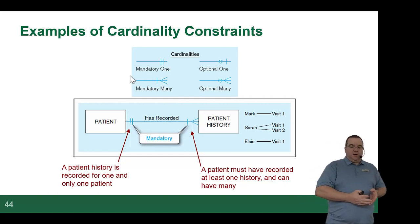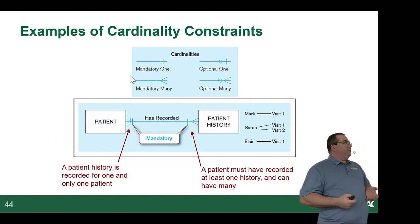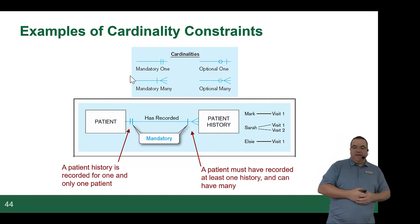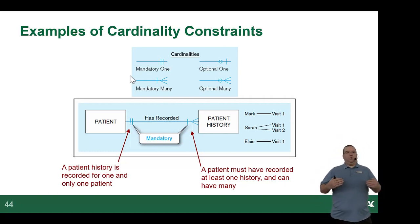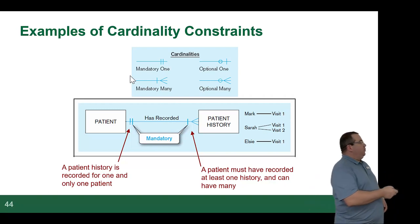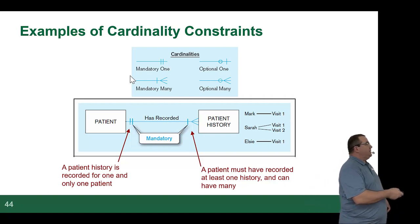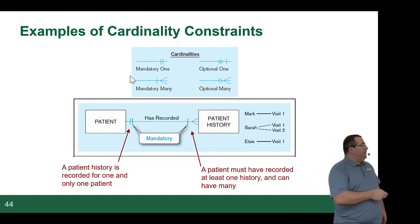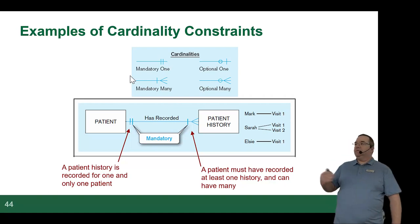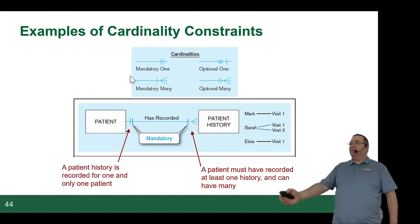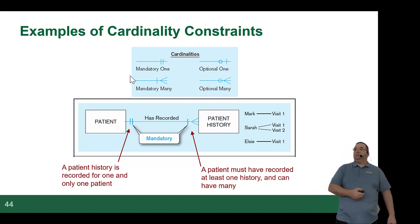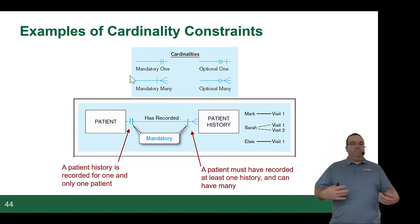In crow's foot notation, there are four symbols. The top-left is a mandatory one — one and only one. Optional one means zero or one, like the locker example. The bottom symbol is a mandatory many — there must be multiple items and at least one. And optional many is the example with bananas — you have the option of having many bananas or no bananas at all.